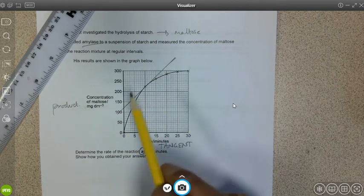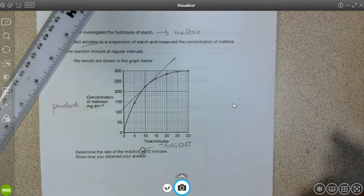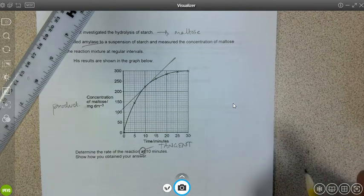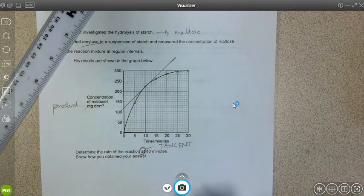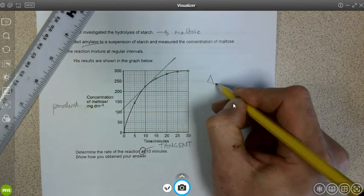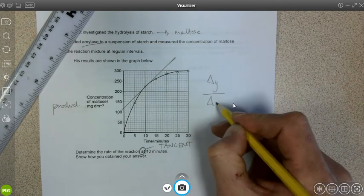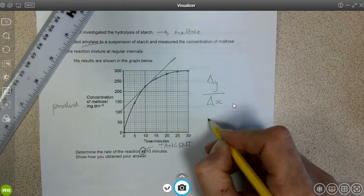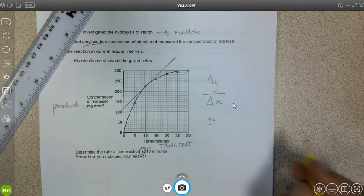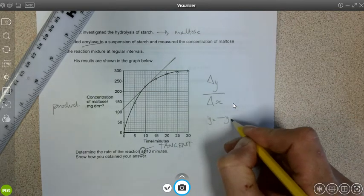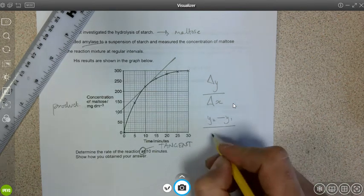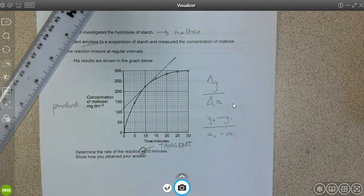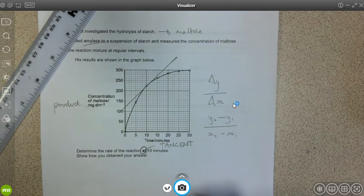You can extend your tangent line right the way to the y-axis and the top of the scale on the y-axis there as well. The reason I do that is it'll make determining the gradient of that line much easier. To determine the gradient we need to know the change in y divided by the change in x. To do that we need to determine what the final concentration is, which we refer to as y2, minus the initial concentration y1, divided by the final time x2 minus the initial time x1.